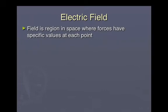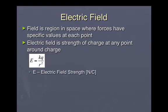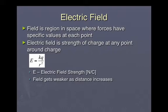A field is a region in space where force will have a specific value, but it can vary at different points. The electric field tells you how strong the charge is at any point — in other words, how much force it has the ability to apply to another charge should it be at that point. The way we calculate the electric field strength is kq over r squared, because it's generated by a single charge. The symbol for electric field strength is capital E, and the unit is the Newton per Coulomb. Notice that 1 over r squared relationship means the field gets weaker and weaker the further you get away from the charge.